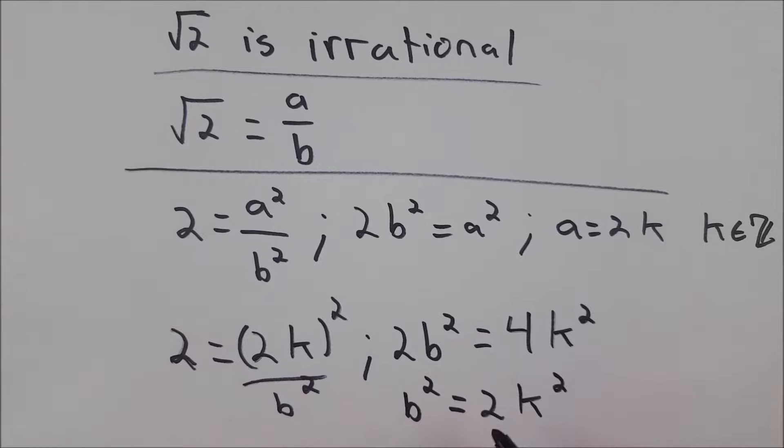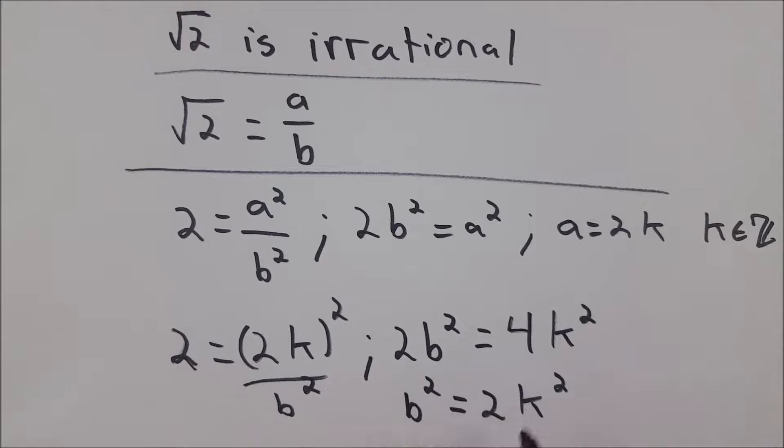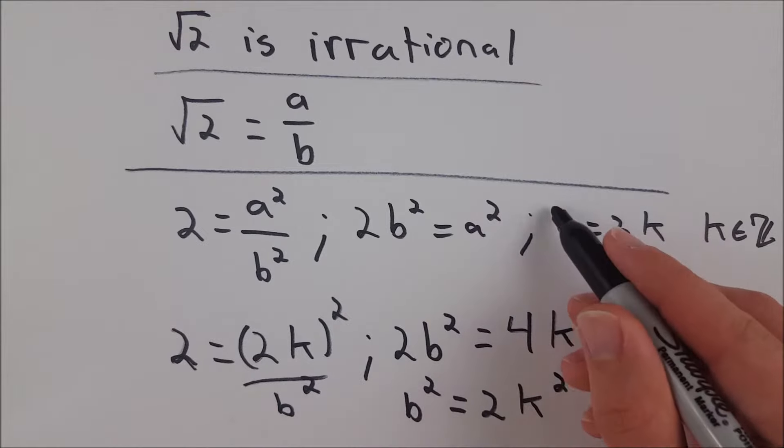And the same exact argument follows here. This means that b squared is an even number and only an even number squared gives you an even number. 2 squared is 4, 4 squared is 16. If you look at odd numbers squared like 3 squared it's 9, 9 squared is 81. Odd numbers squared always give you odd numbers. Even numbers squared always give you even numbers. So for b squared to be even, b has to be even as well.